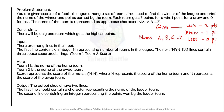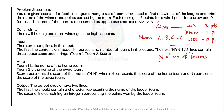The constraints state there will be only one team which gets the highest points, so we have to develop logic such that the output will be the one team with the highest points. The input is also mentioned: the first line contains an integer N representing the number of teams. The next lines are determined by the formula N*(N-1)/2, each containing three space-separated strings.